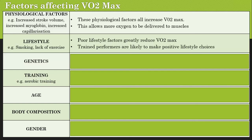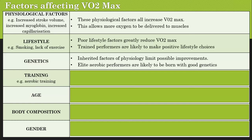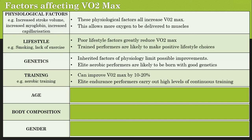Inherited factors from your parents will limit possible improvements, and elite aerobic performers are likely to be born with good genetics. Training — in particular aerobic training — is one thing we can do to improve our VO2 max, but it can only improve it by up to 10% to 20%.